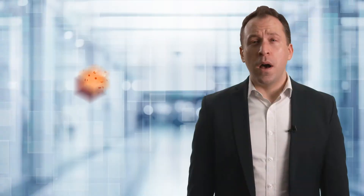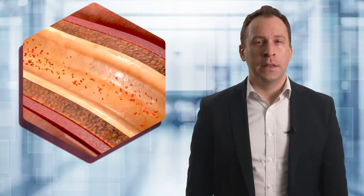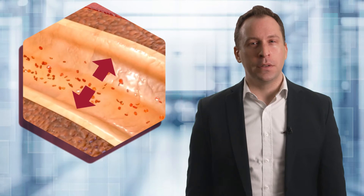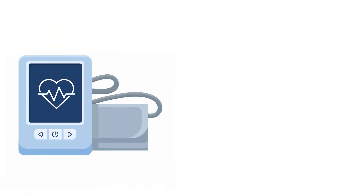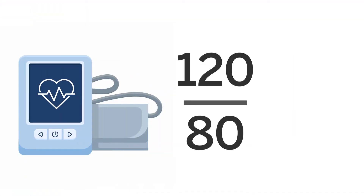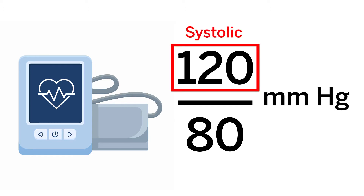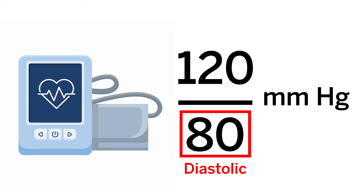When the heart pumps blood through the arteries, the blood puts pressure on the artery walls. This is known as blood pressure. Blood pressure is reported as two numbers, both in units of millimeters of mercury. The top number is the systolic blood pressure, representing pressure when the heart is ejecting blood into the arterial system. The bottom number is the diastolic blood pressure, representing pressure when the heart is relaxing — diastole.